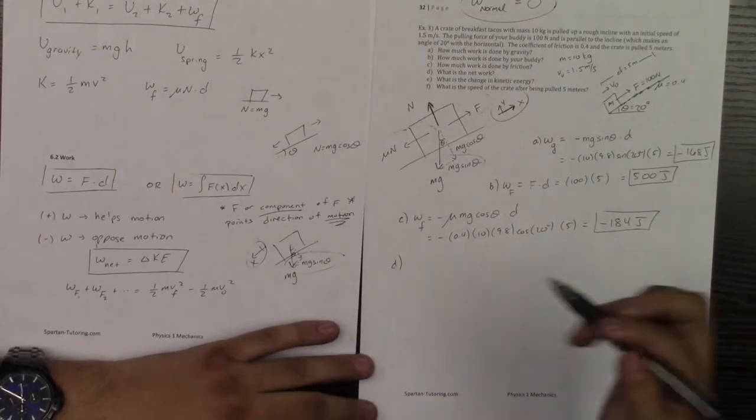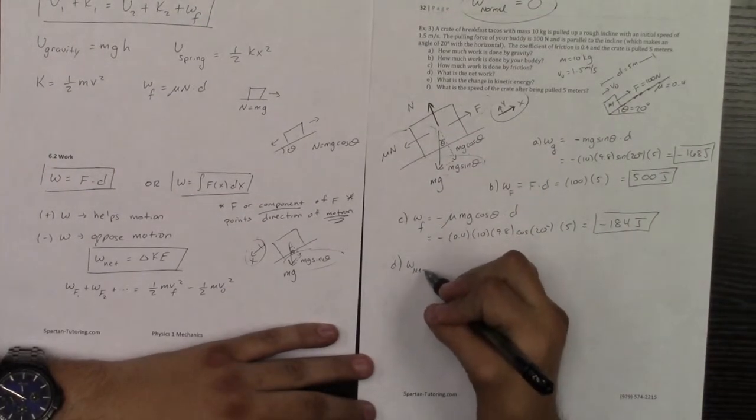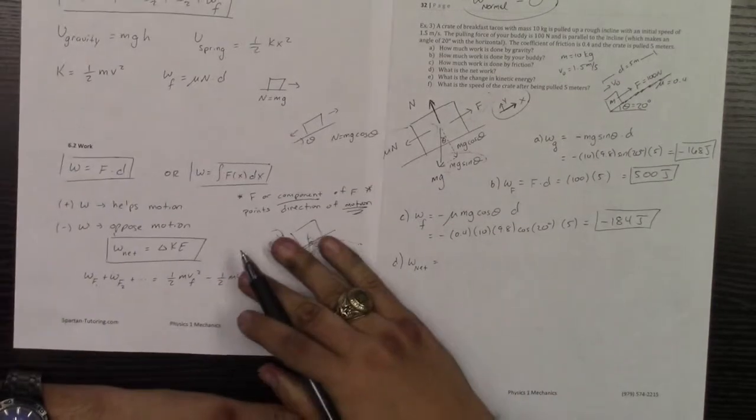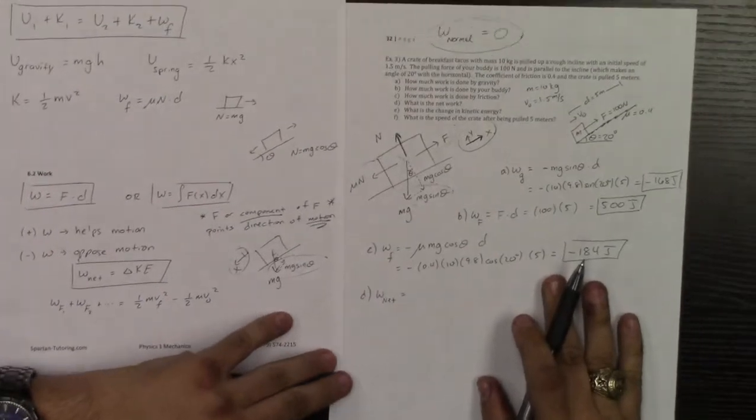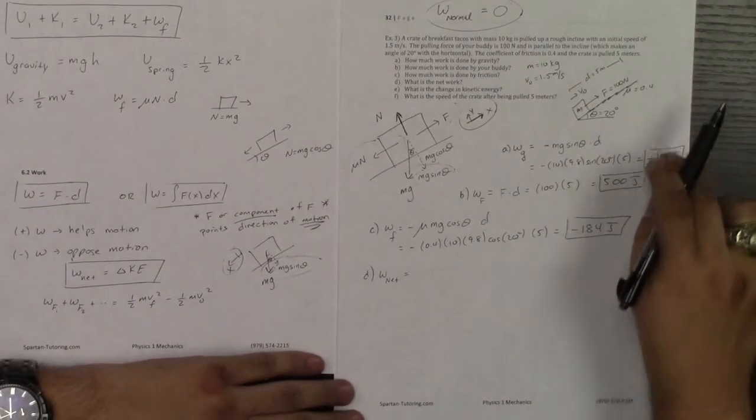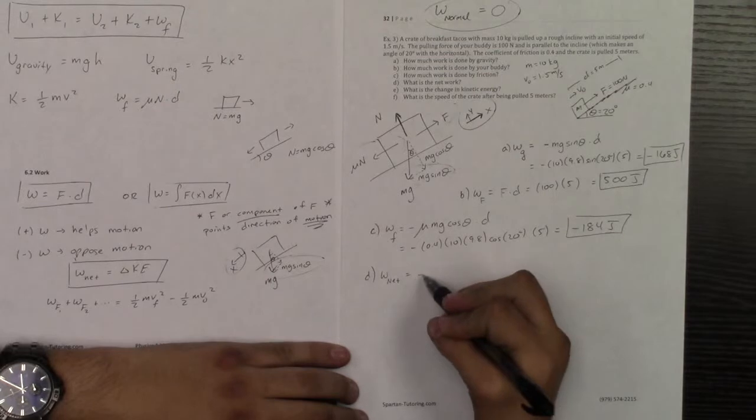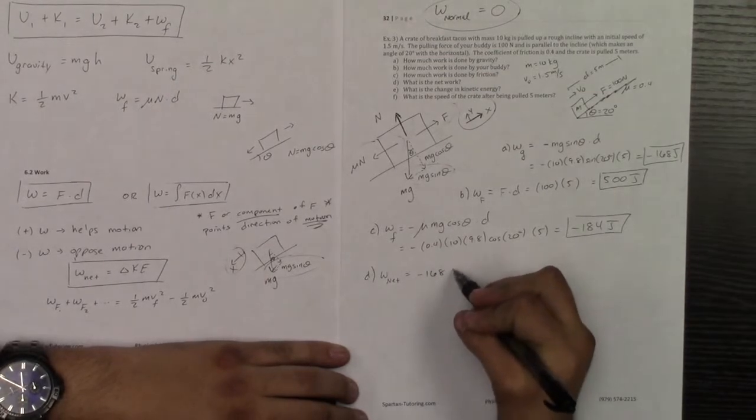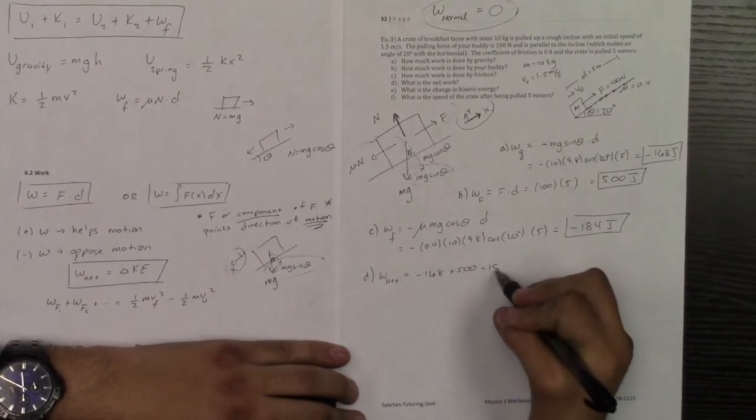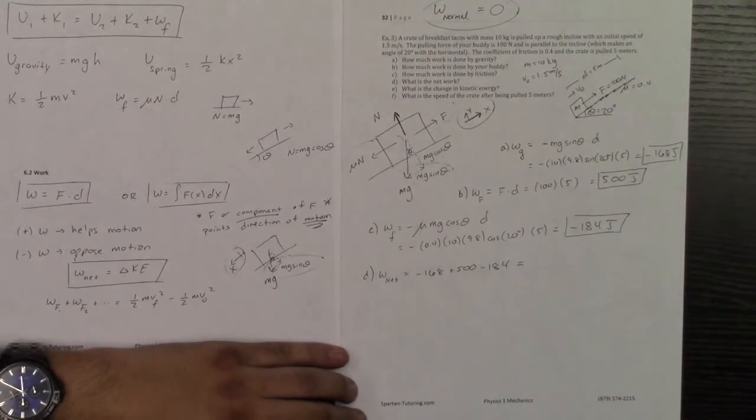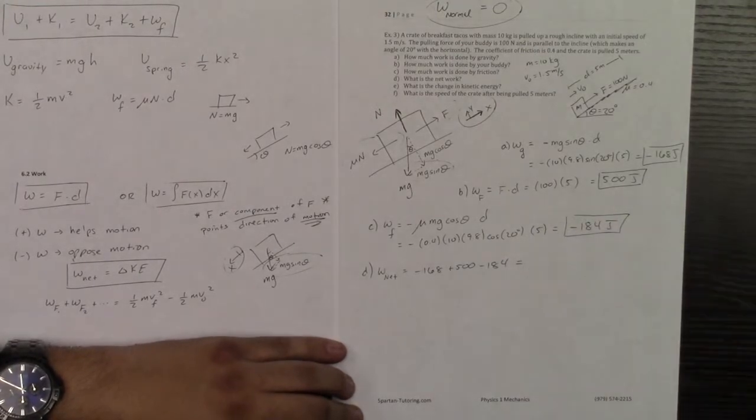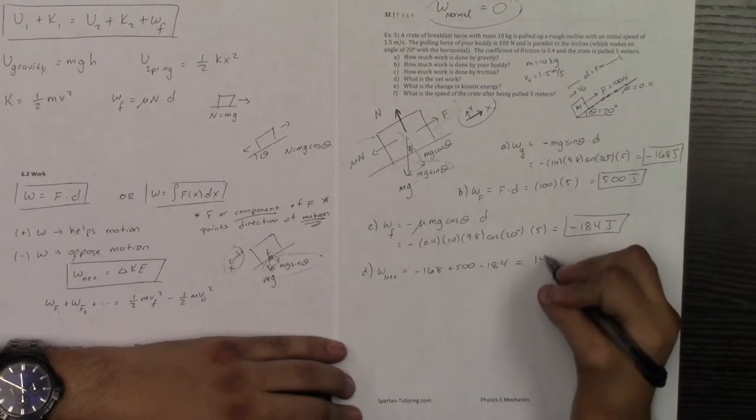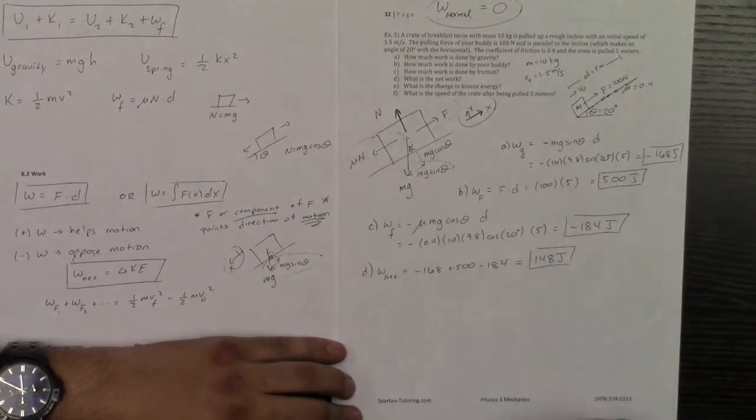Take a look at part D. What is the network done on the system? The network done on the system, what that's going to be, it's going to be the sum of all the works done by all of the forces. And so what I'm going to do, I've got all the works done by all of the forces. It's going to be that negative 168 plus that 500 minus that 184. And so let's go ahead and throw that in. Negative 168 plus 500 minus 184 is 148. The network done on the system is 148 joules.